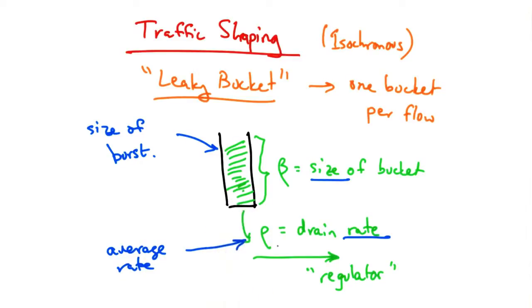So even though the average rate cannot exceed rho, at times the sender might be able to send at a faster rate as long as the total size of the burst does not exceed the size of the bucket or overflow the bucket.